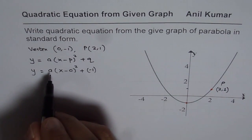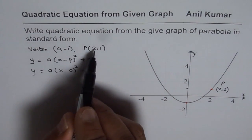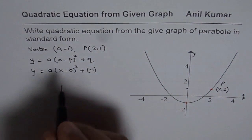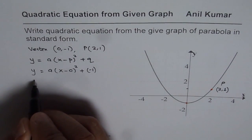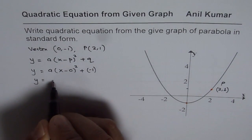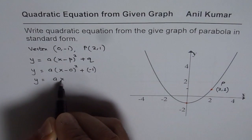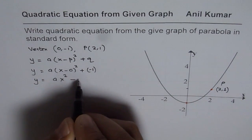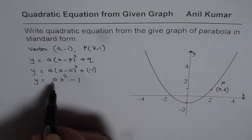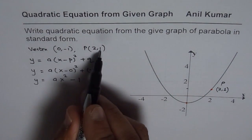To find a, we can use the point (2, 1). Let me simplify this and write this as y = ax² - 1. Now to find a, replace x with 2 and y with 1.